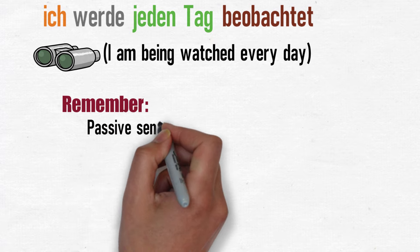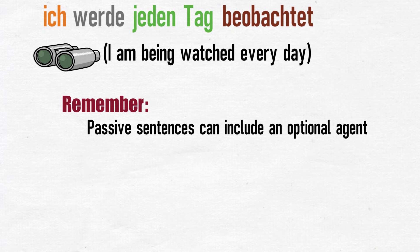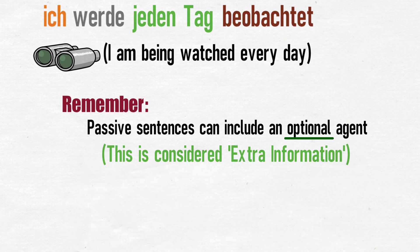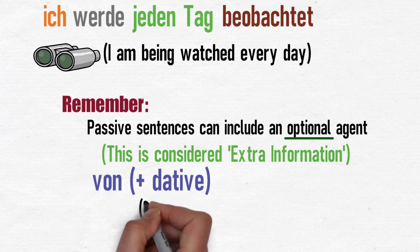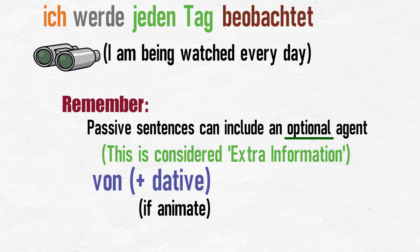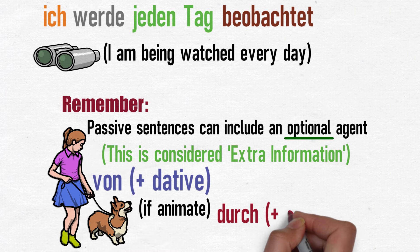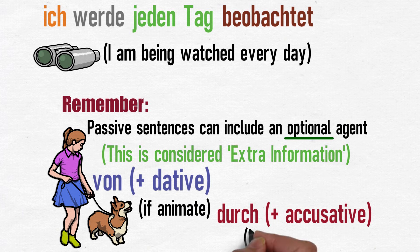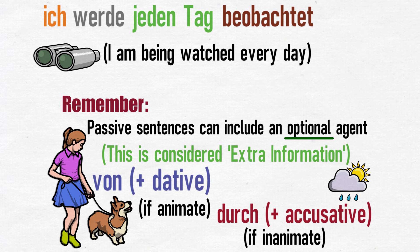As I mentioned earlier, passive sentences can include what we call an agent — the person or thing doing the action — but this is completely optional. To do this in German, we include it in the extra information section, between the form of werden and the past participle, and we use the following words and cases. We use 'von' and the dative case if the agent is animate — meaning it's a living thing, so a person or an animal. We use 'durch' and the accusative case if the agent is inanimate — so if it's not alive. And here are some examples.